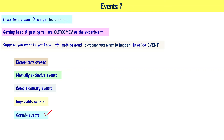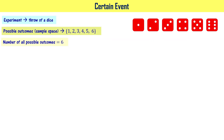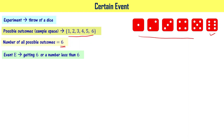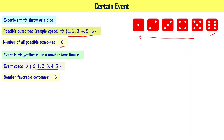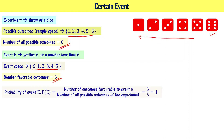Now, certain events. When you throw a dice, all possible outcomes are 1, 2, 3, 4, 5, 6. For example, event E is getting 6 or a number less than 6. All 6 elements are favorable outcomes. So probability = 6/6 = 1.